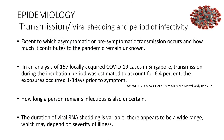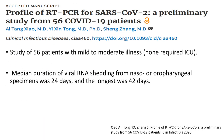The extent to which asymptomatic or pre-symptomatic transmission occurs and how much it contributes to the pandemic remains unknown. In an analysis of 175 locally acquired COVID-19 cases in Singapore, transmission during the incubation period was estimated to account for 6.4%. How long a person remains infectious is also uncertain. In a study of 56 patients with mild to moderate illness not requiring ICU, the median duration of viral RNA shedding from nasal or oropharyngeal specimens was 24 days, with the longest being 42 days.